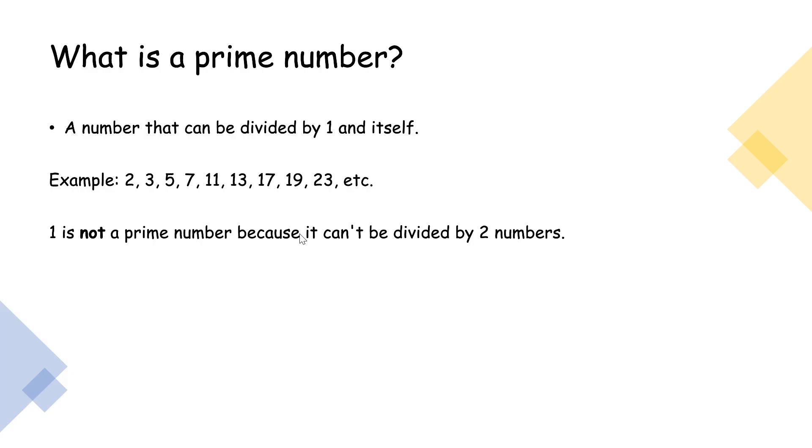Now, what is a prime number? Before knowing anything about factorization, you need to know about prime numbers. A number that can be divided by 1 and itself. So there are two numbers, that 1 and itself. Examples can be 2, 2 can be divided by itself and by 1.